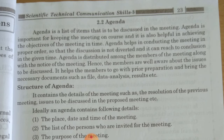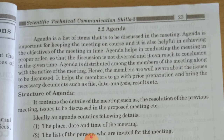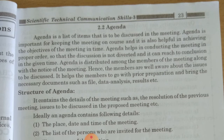The agenda is a list of items that are to be discussed in the meeting. Agenda is important for keeping the meeting on course and is also helpful in achieving the objective of the meeting in time. Agenda helps in conducting the meeting in proper order so that discussion is not deviated and a conclusion can be reached in the given time.